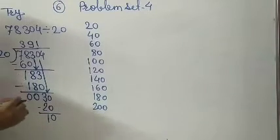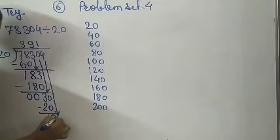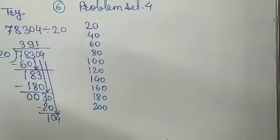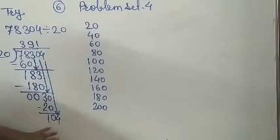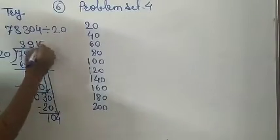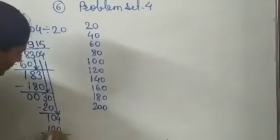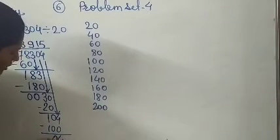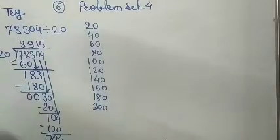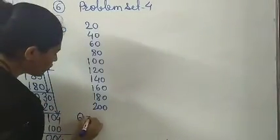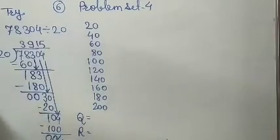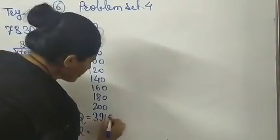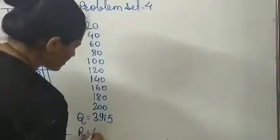Finally, one more number is remaining — that is 4. So take that 4 down. In the table of 20, is 104 there? No. So we want the nearest number smaller than 104, which is 100. So 5 times 20 is 100. Now: 4 minus 0 is 4, 0 minus 0 is 0, 1 minus 1 is 0. So what is the quotient and remainder? The number on top is the quotient, so the quotient is 3950 and the remainder is 4.